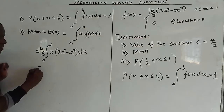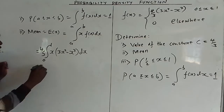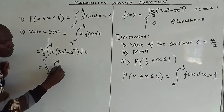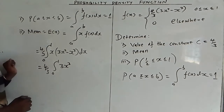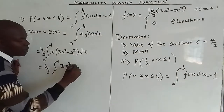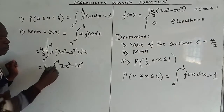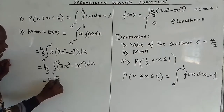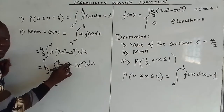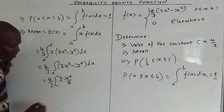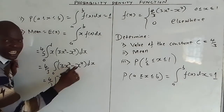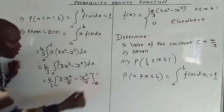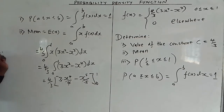So we have (4/3) times the integral from 0 to 1 of (3x³ - x⁴) dx. Integrating: the integral of 3x³ gives 3x⁴/4, and the integral of x⁴ gives x⁵/5. So we have (4/3) times [3x⁴/4 - x⁵/5] evaluated from 0 to 1.